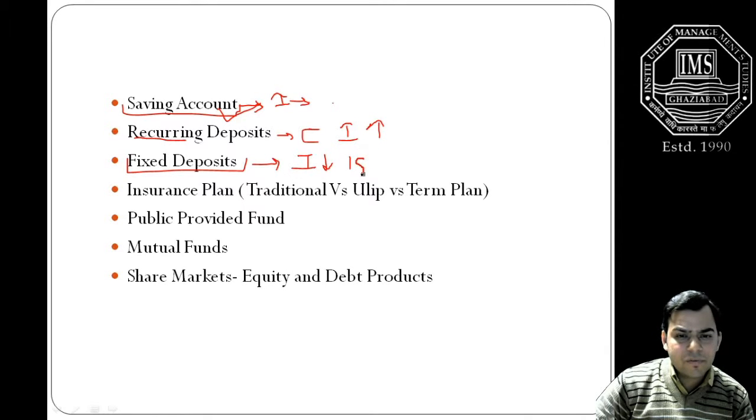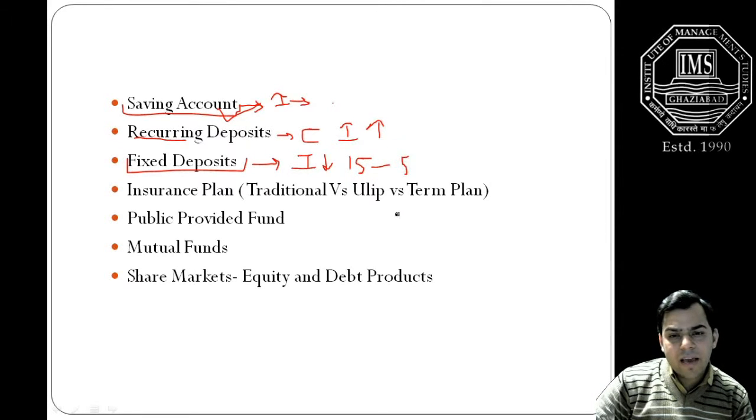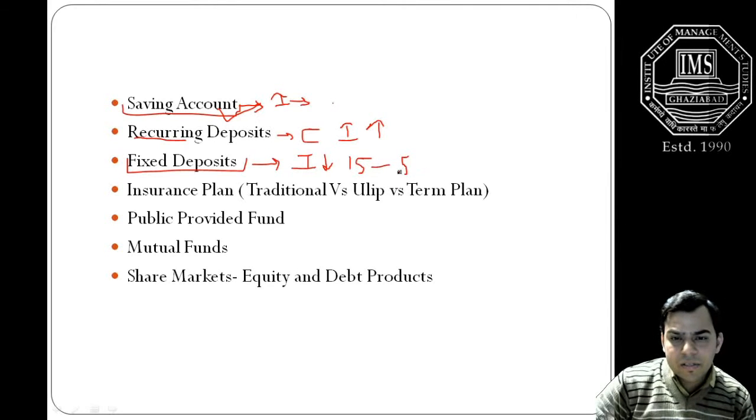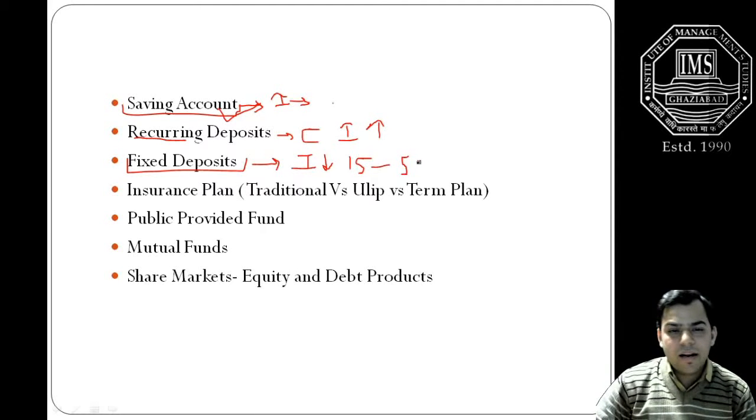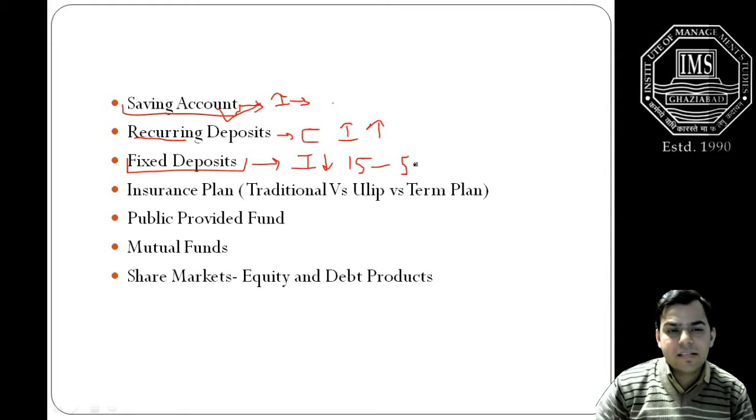You can have the fixed deposits from 15 days - you can have the deposit from the minimum duration of 15 days. It can go till the end of five years. If you open a fixed deposit for five years, it can also protect you from the tax liability and it is actually considered as a tax saving investment.